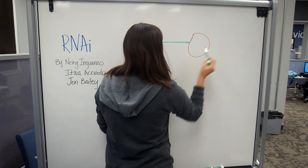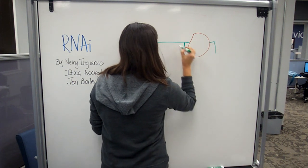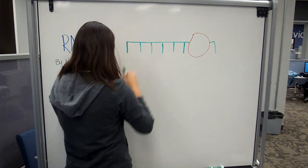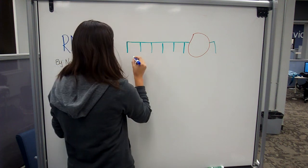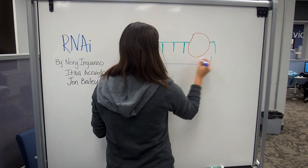The dsRNA is recognized and cleaved into 19 to 23 nucleotide-long siRNA by the Dicer complex, shown here.